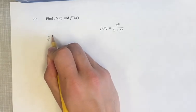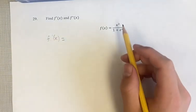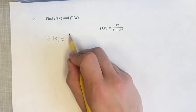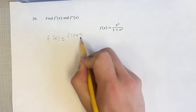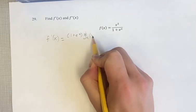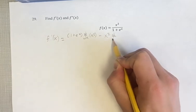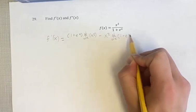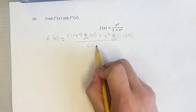For the first derivative, we're going to use the quotient rule because we have a fraction here. It's going to be the denominator times the derivative of the numerator, minus the numerator times the derivative of the denominator, over the denominator squared.